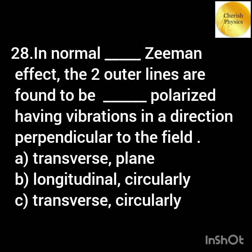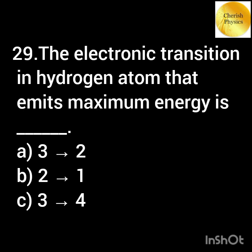In which type of Zeeman effect are the two outer lines found to be dash polarized, having vibrations in a direction perpendicular to the field? The electronic transition in hydrogen atom that emits maximum energy is...